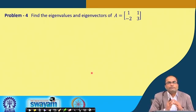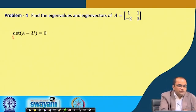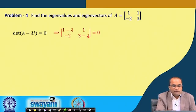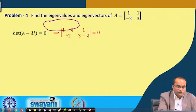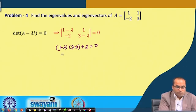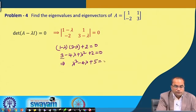Another example: find the eigenvalues and eigenvectors of A = [1, 1; −2, 3]. Computing det(A − λI) = 0 gives (1−λ)(3−λ) + 2 = 0. Expanding: 3 − λ − 3λ + λ² + 2 = λ² − 4λ + 5 = 0.